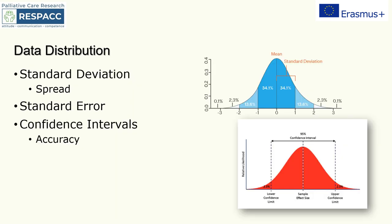Our sample will never be a perfect representation of the population. Different samples from the same population will give different results, and this is called sampling error. Standard deviation tells us how much data from the same sample vary around the mean. The standard deviation is the average amount of variability in your data set — it tells you on average how far each score lies from the mean. In normal distributions, a high standard deviation means values are generally far from the mean, while a low standard deviation indicates values are clustered close to the mean.